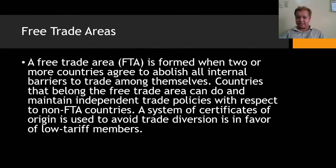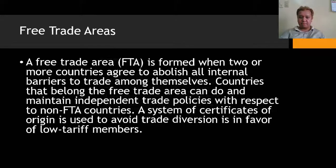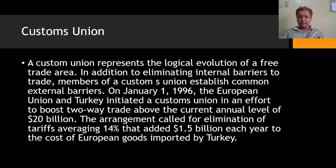A free trade area is formed when two or more countries agree to abolish all internal barriers to trade among themselves, while maintaining independent trade policies toward non-FTA countries. A system of certificates of origin is used to avoid trade diversion in favor of low-tariff members. A customs union represents the logical evolution of a free trade area — in addition to eliminating internal barriers, members of a customs union establish common external barriers.